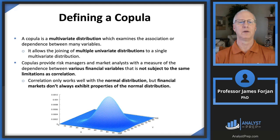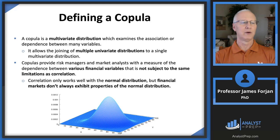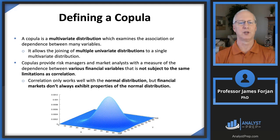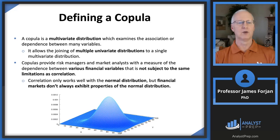A copula is a multivariate distribution that examines the association or dependence between two or among many different variables. The key is to get away from our two-dimensional thinking. Looking at the distribution from the X or Y axis, it looks like a regular bell-shaped curve. But in three dimensions, you get a surface that looks like a mountain — and that surface allows us to examine relationships between variables beyond the limitations of a simple correlation coefficient.